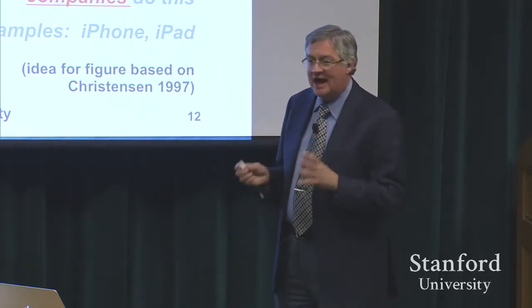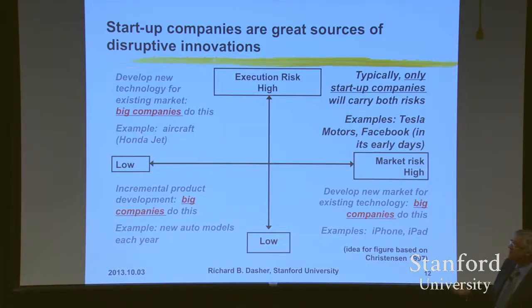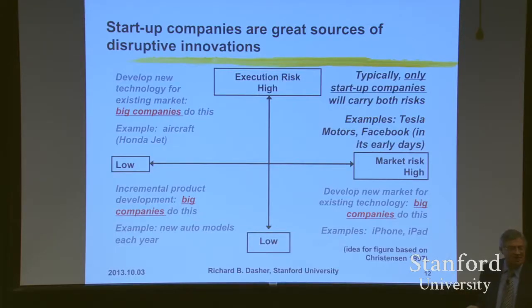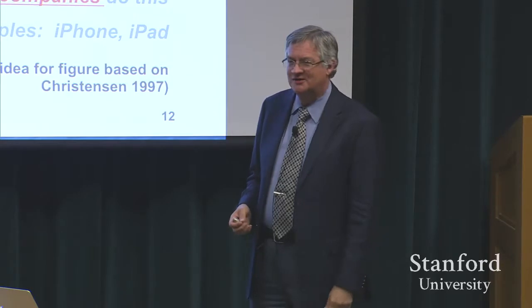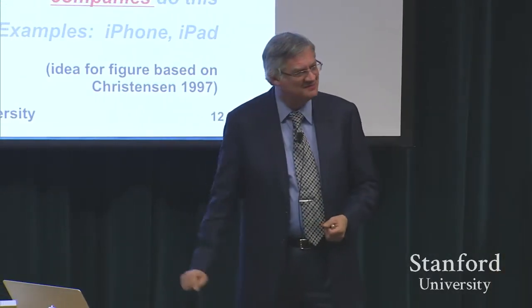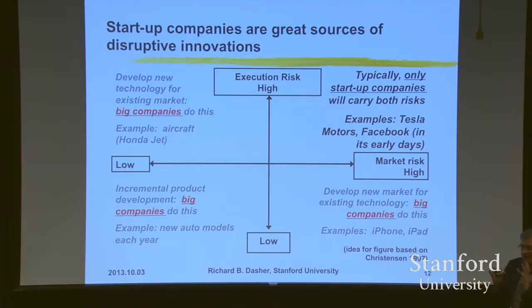If you're creating a new technology and creating a new market, typically a big company can't incubate an idea like that for a long time — it's going to start outside a big company. Look at Tesla Motors. Before Tesla came along with the Roadster, other companies had been playing around with electric cars for existing markets — the around-town market. Tesla Motors came up with the idea of a high-performance electric sports car. That's hard development, but also very risky. Who would want one? That's a classic case of a major innovation that started out in a startup company.